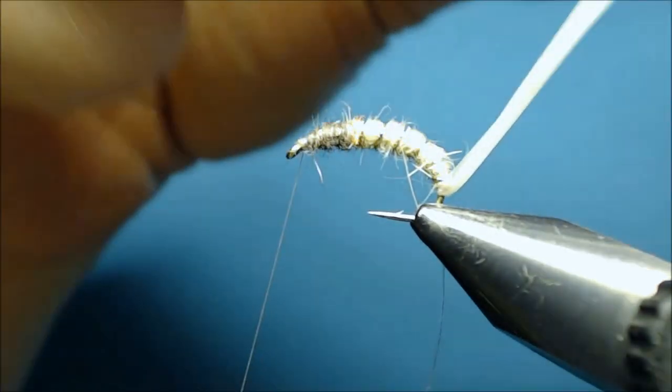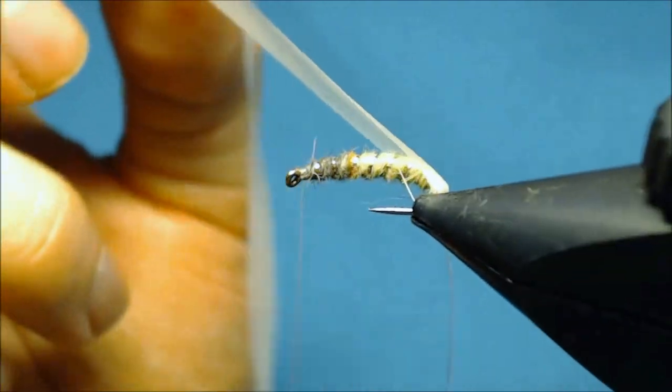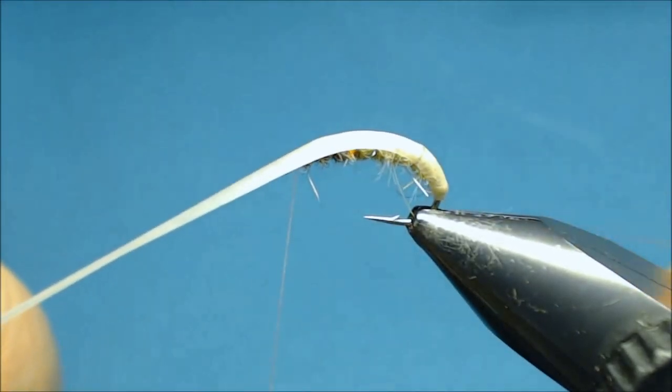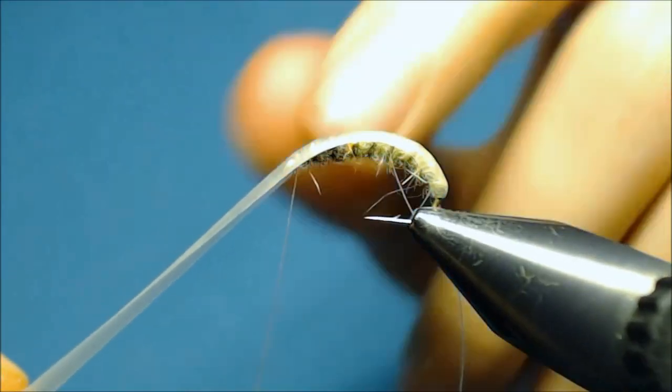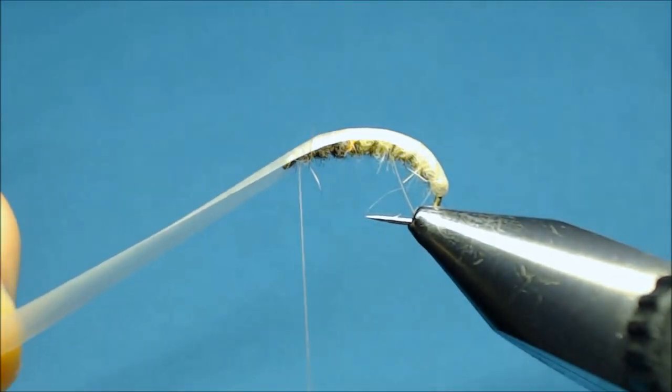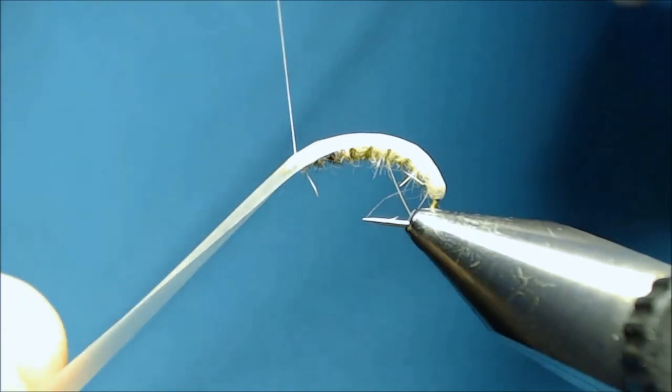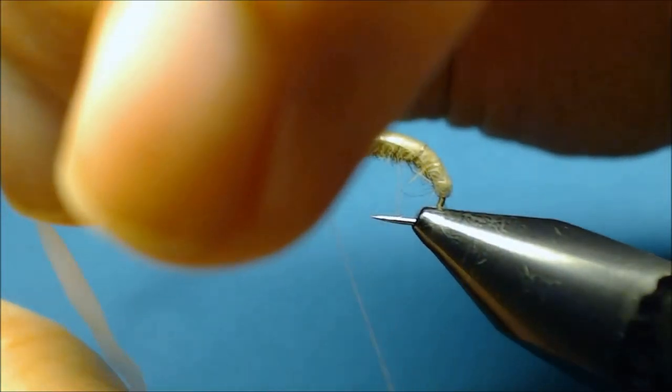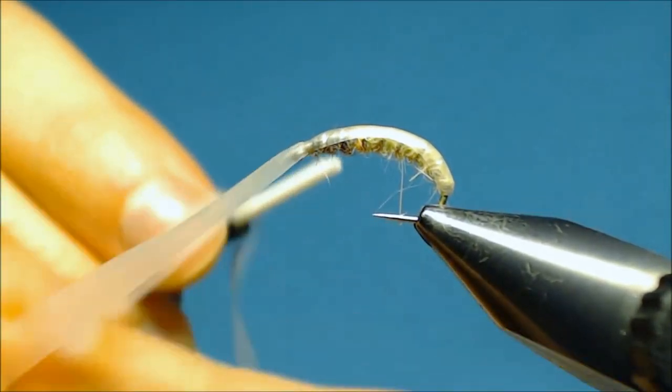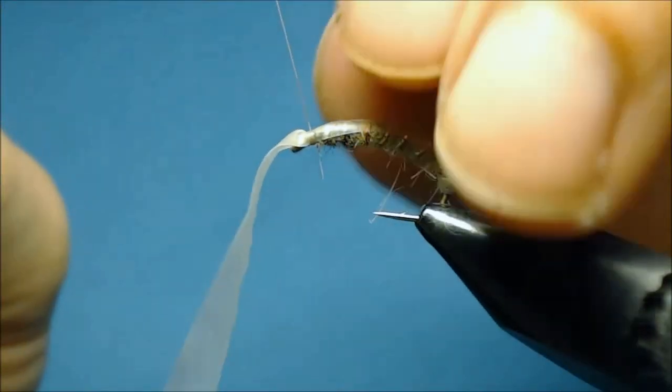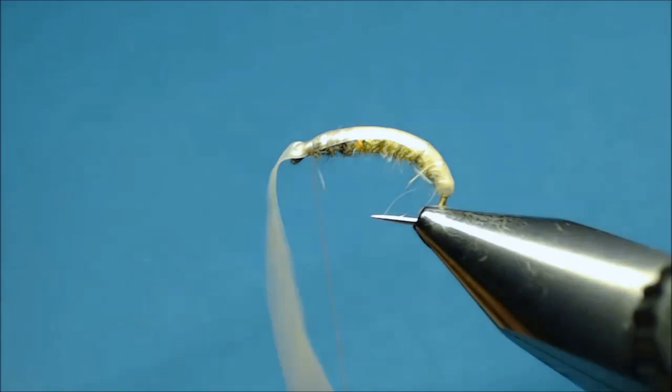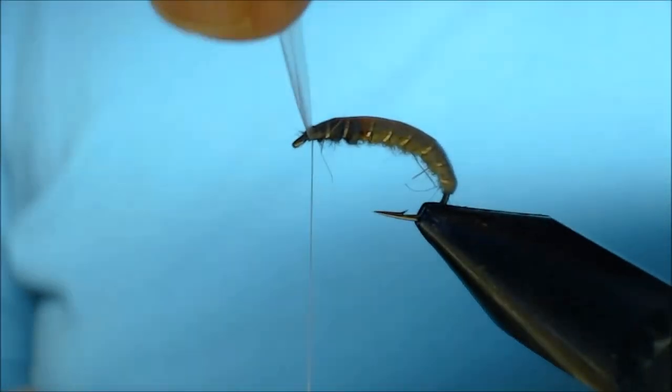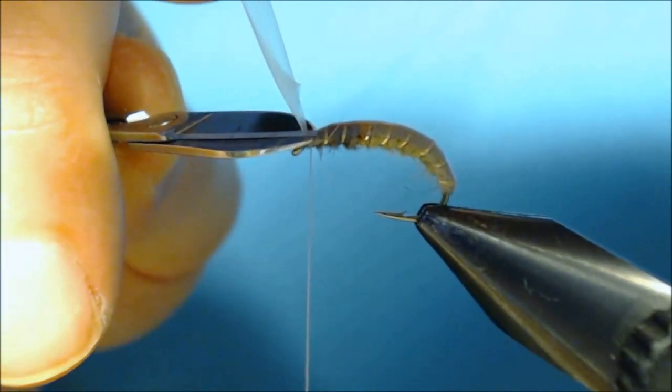Now bring up the back of the fly, fold it over, and making sure that it stays in the center, just tie it off at the eye. And here you can also put a lot of strength on your thread. You don't want this to slip out. And now just pull on your back and cut it off.